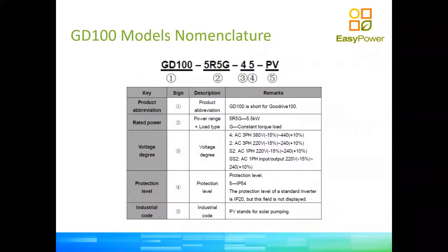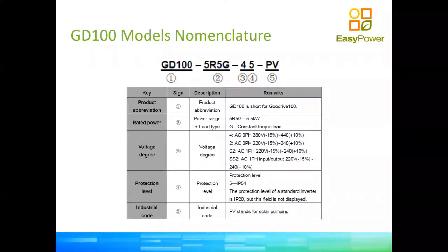On ordering nomenclature, the part number breaks down as follows: the first part is the product type — GD100. Then the rated power, for example 5.5 kilowatts. Then the voltage: digit '4' means three-phase 380 volts phase to neutral. The second digit is the protection level — in this case IP54. And the last digit indicates it is the solar version, since you can also buy this drive without the solar feature.